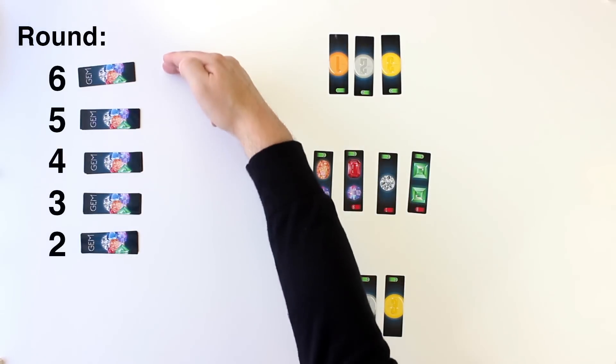In subsequent rounds, use the remaining gem piles in order for the auctions. The opening bidder makes a bid, 0 or higher, without indicating his gem card of choice.